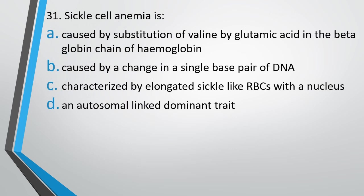Question number 31. Sickle cell anemia is caused by substitution of valine by glutamic acid in the beta chain of hemoglobin, caused by a change in a single base pair of DNA, characterized by elongated sickle-like RBC with a nucleus, or it is an autosomal linked dominant trait. The correct answer is option B — it is caused by a change in a single base pair of DNA.